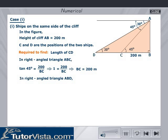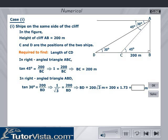In right-angled triangle ABD, tan 30° = 200/BD, which implies 1/√3 = 200/BD. Therefore, BD = 200√3 meters, which equals 200 × 1.73 = 346 meters.